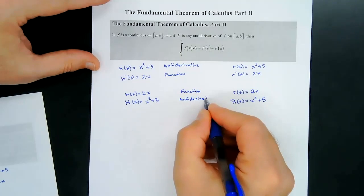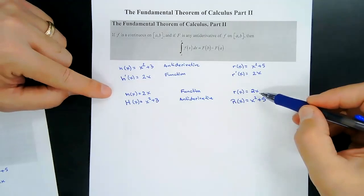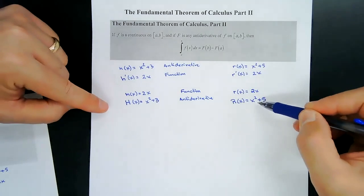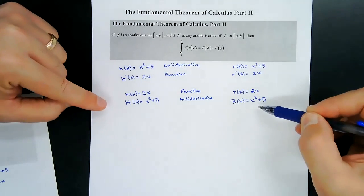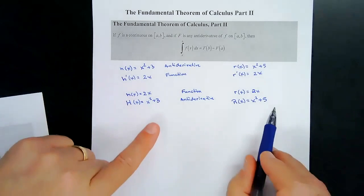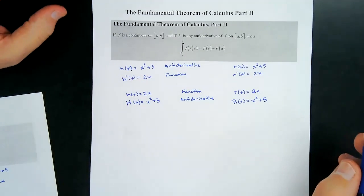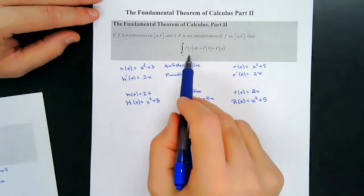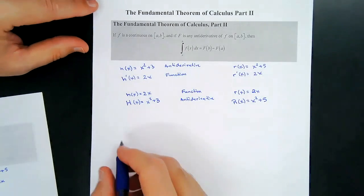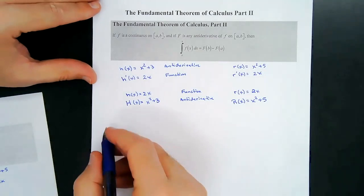Now I want you to notice something here: these two functions h and r are actually both 2x, but they came from two different antiderivatives. So what's the difference between them? It's this constant C. So I'm going to show you why this theorem works, and we're going to use what we learned yesterday to help us out.